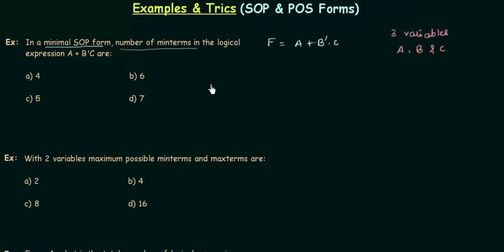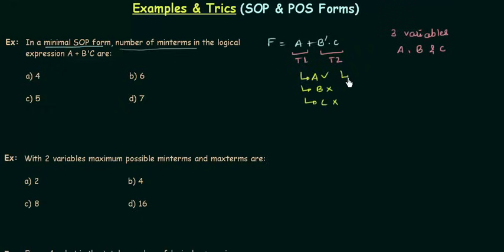Step two: find the absent variables. In term one (which is A), we don't have B and we don't have C — both are absent. In term two (B complement and C), we don't have A, but we have B in complemented form and we have C. We only find which variables are present or absent — you don't have to worry about the complement. So in term one, B and C are absent; in term two, A is absent.